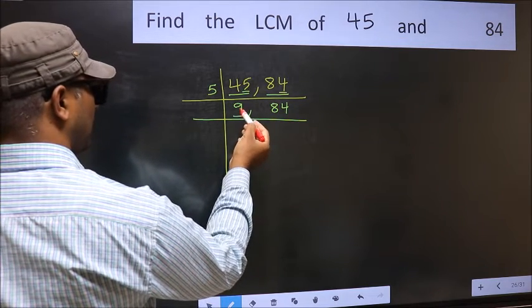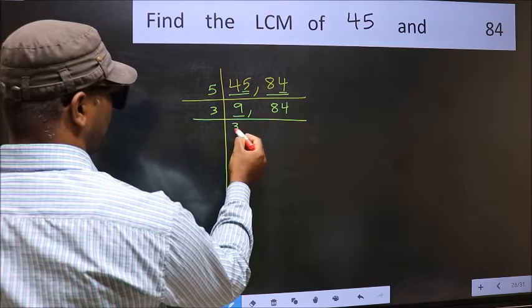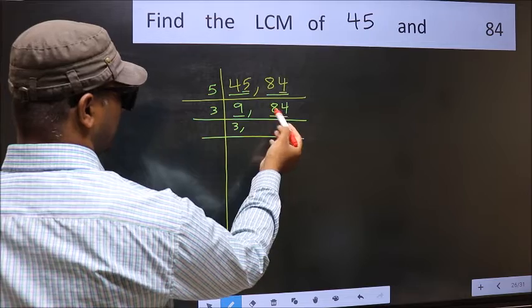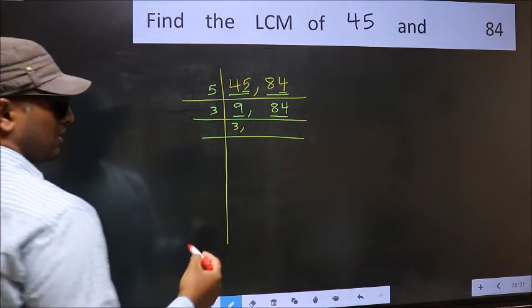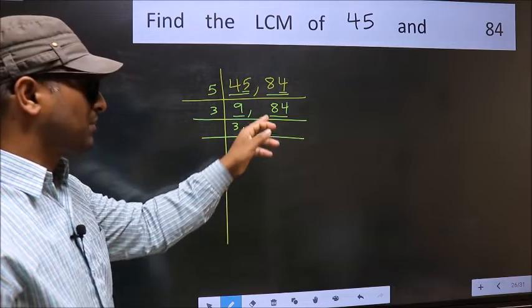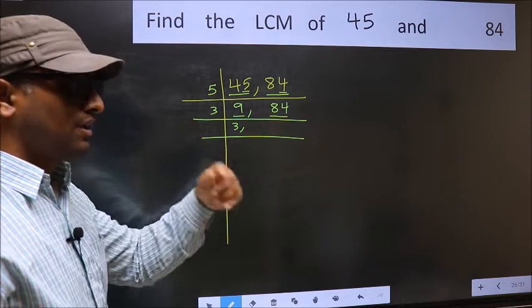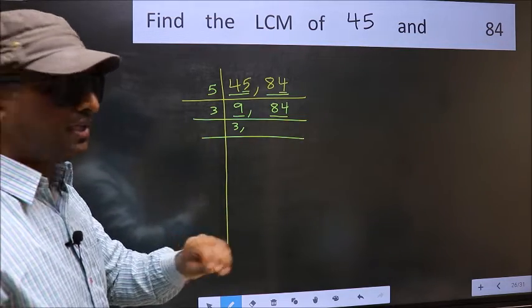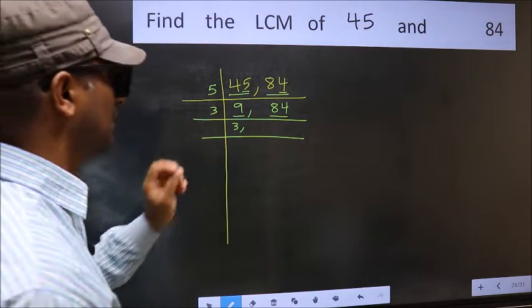Now here we have 9. 9 is 3, 3 is 9. The other number, 84. To check whether 84 is divisible by 3 or not, add the digits. 8 plus 4, we get 12. And 12 is divisible by 3. So this number also divisible by 3.